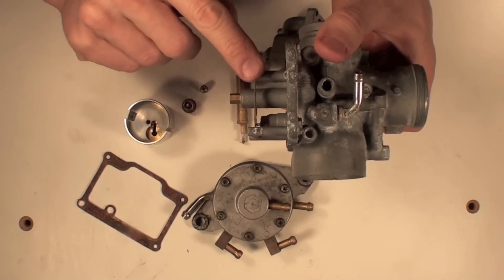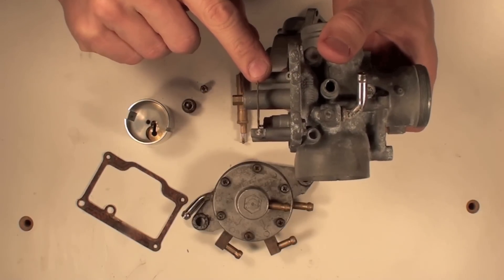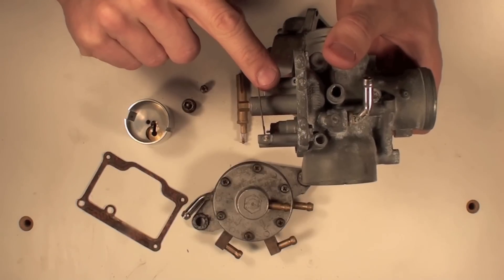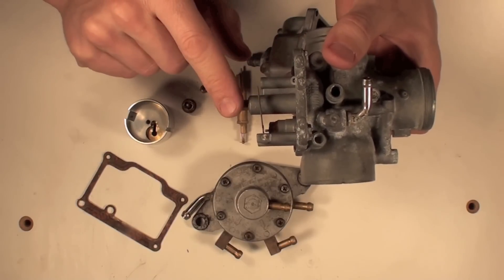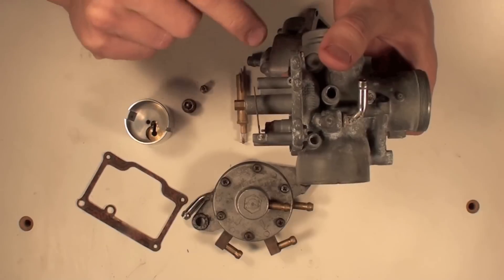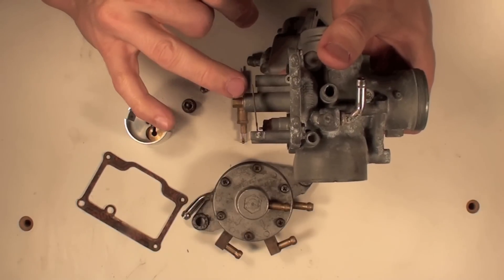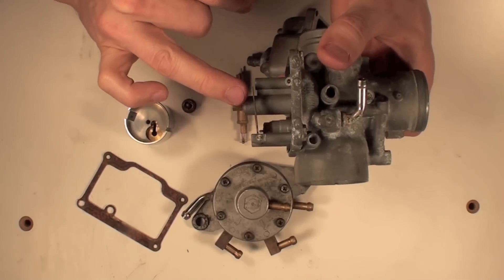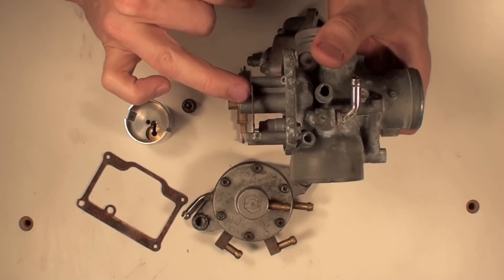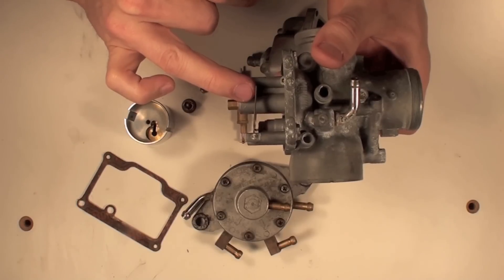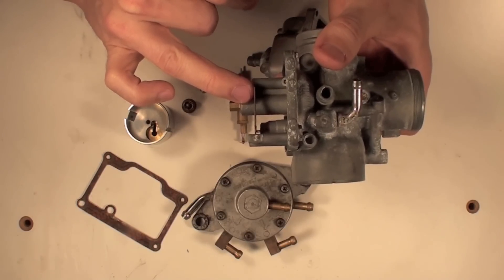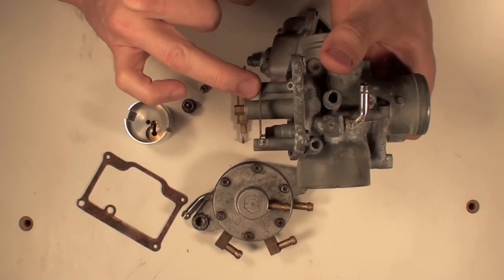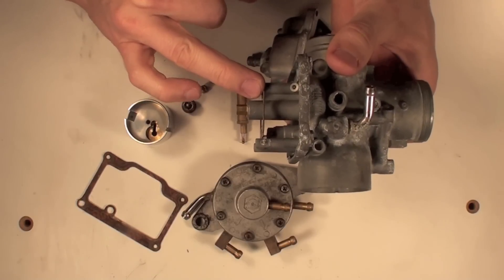The important thing about having this float arm set correctly is that if it's open too much, it will allow too much fuel in, and you will create a rich mixture in your engine, and you'll probably flood it out. Fill the crankcase full of fuel, or it just won't run. If it's not set correctly and it's running too lean, won't let enough fuel in, then you run into issues with the lean fuel mixture.